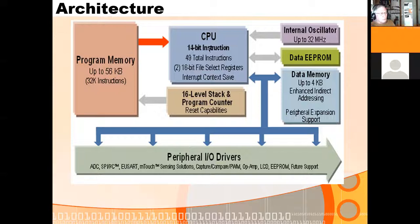Understanding how this 14-bit instruction is implemented is really important for writing assembly language programs. There are a total of 49 different operation codes — basically 50 instructions. You do have two 16-bit file select registers which have to be addressed eight bits at a time with FSS1 high, FSS1 low, FSS0 high, and FSS0 low. These are used for indirect addressing.